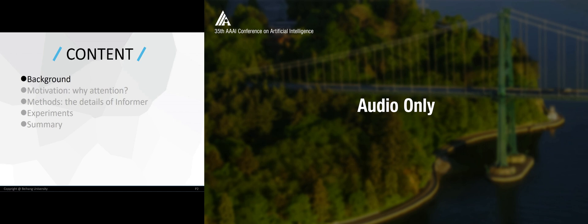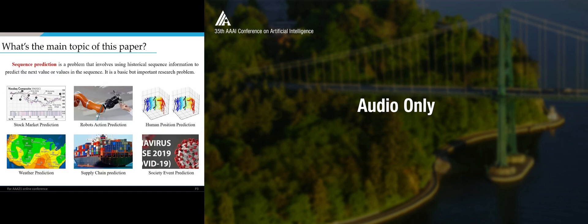Secondly, the motivation - why we use self-attention here. And the method is the details of Informer and some hints. We have conducted several experiments and will briefly explore the results in the appearance parts. So what's the main topic of this paper? It's sequence prediction. This is a kind of classic problem which can be applied in stock market prediction, human position prediction, weather prediction, supply chain prediction, and social event prediction.